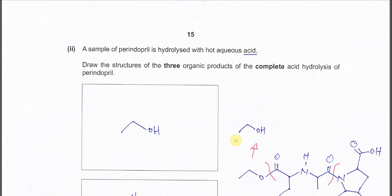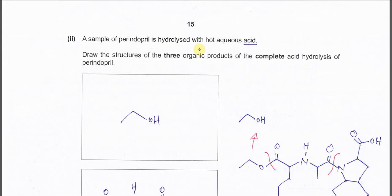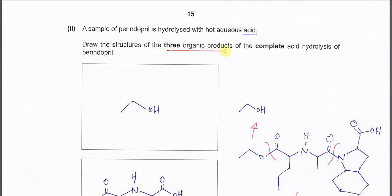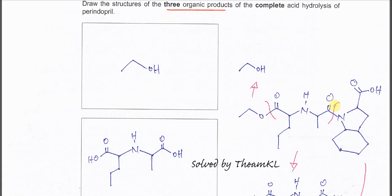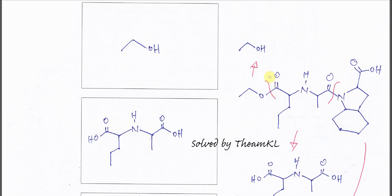Part 2: a sample of this Perindopril is hydrolyzed with aqueous acid. Draw the structures of three organic products of the complete acid hydrolysis of this compound. Very easy. Hydrolysis happens at the ester and the amide. The ester group undergoes hydrolysis — this O will get H and will form an alcohol, which is ethanol. The amide group also breaks and undergoes hydrolysis — this will get OH and the N will get H.